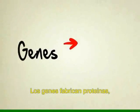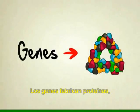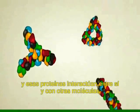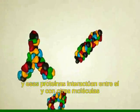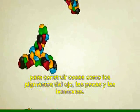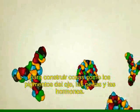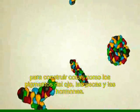Genes make proteins. Those proteins interact with each other and all sorts of chemicals inside the body to build things like eye pigments, freckles, and hormones.